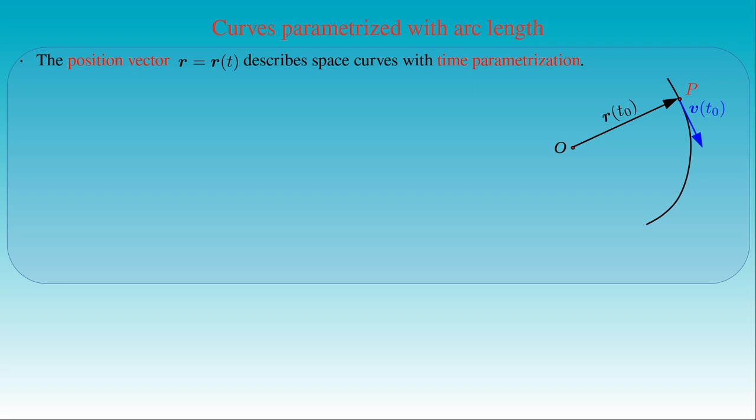The velocity of the point mass is described by the velocity vector v(t0), which is the tangent to the curve at the point P. At the instant of time t1, the point mass will reach the point P', described by the position vector r(t1). The velocity of the point mass at the point P' is given by the tangent vector v(t1) to the curve at that point.